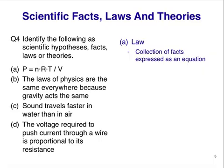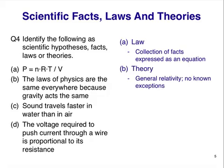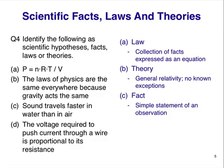The first statement is a law — a collection of related facts. This one collects how pressure changes with the amount of gas, temperature, and volume. It is usually called the ideal gas law. We don't even need to know what the symbols mean — laws in physical sciences can usually be written as equations. B is a theory: it gives us a conceptual understanding of why something is the way it is. Look for key words in theories like 'because' or 'due to.' The third statement is a fact. It simply states something that is true without any insights, explanations, or concepts, so it cannot be a hypothesis or a theory. It is not a generalized statement of repeated observations and cannot be expressed as an equation, so it is not a law.